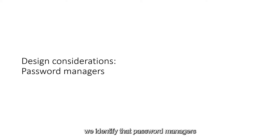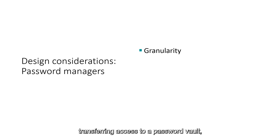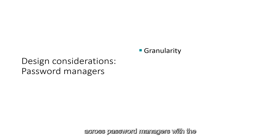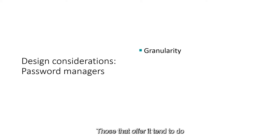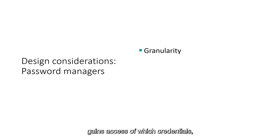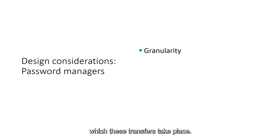Focusing on password managers, I will highlight four specific problems identified and how password managers might be used in digital legacy planning. First, password managers that feature functionality for transferring access to a password vault — often referred to as emergency contact functionality — need to feature granularity. Those that offer it tend to transfer the entire password vault. We argue there is significant scope to allow granular control over who gains access to which credentials, as well as the timing and manner in which transfers take place.